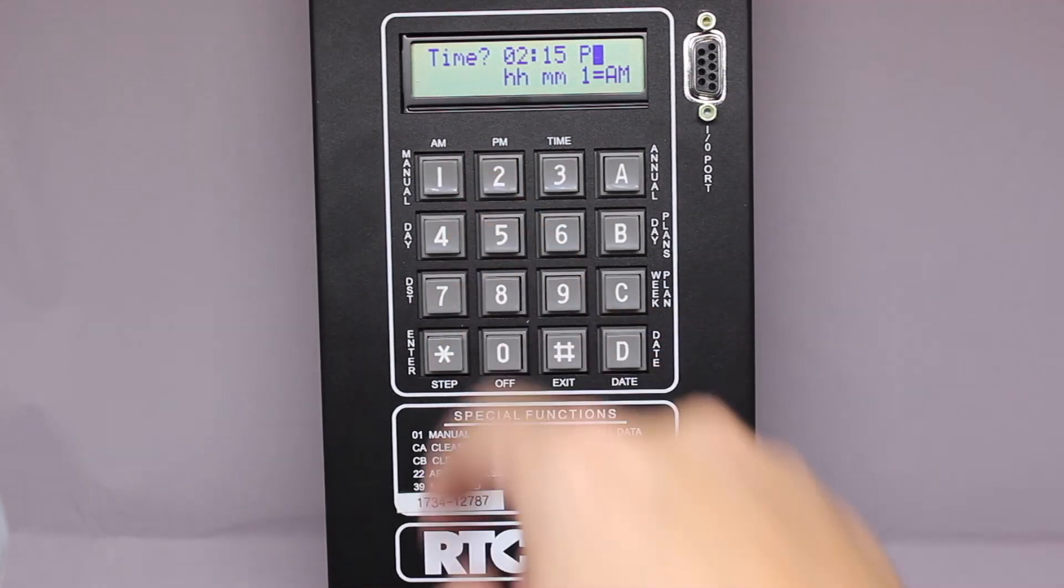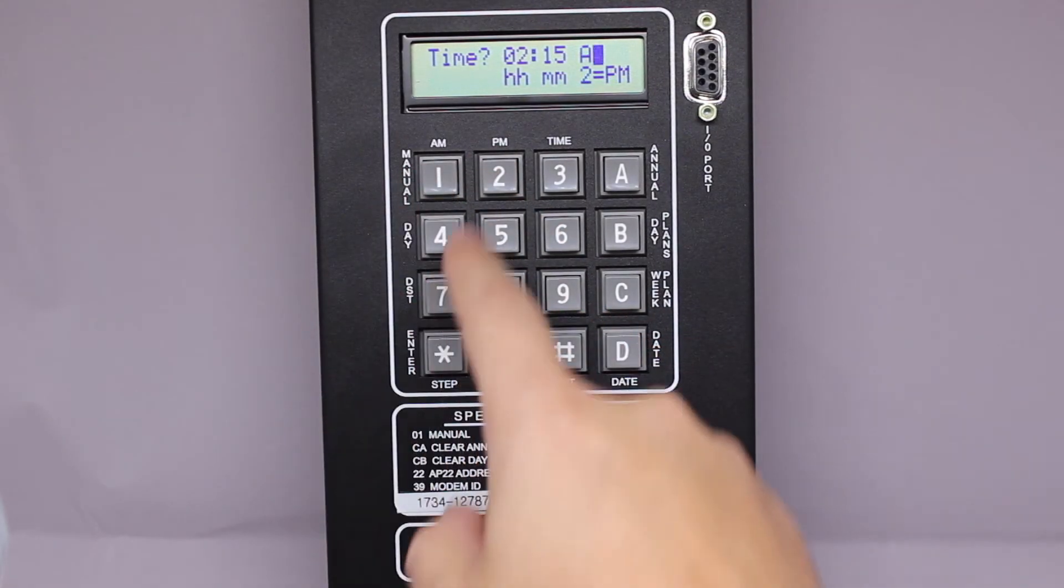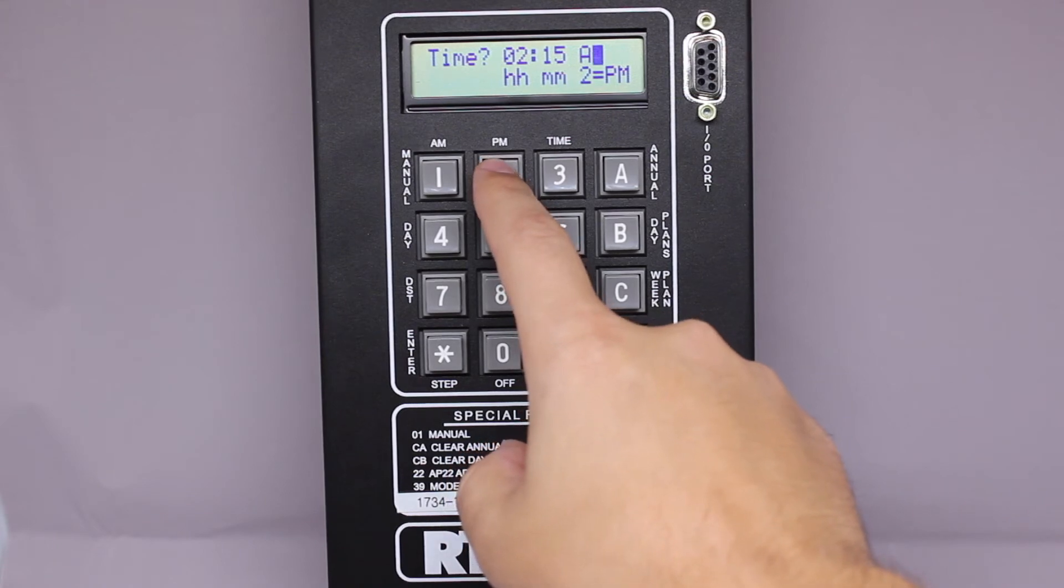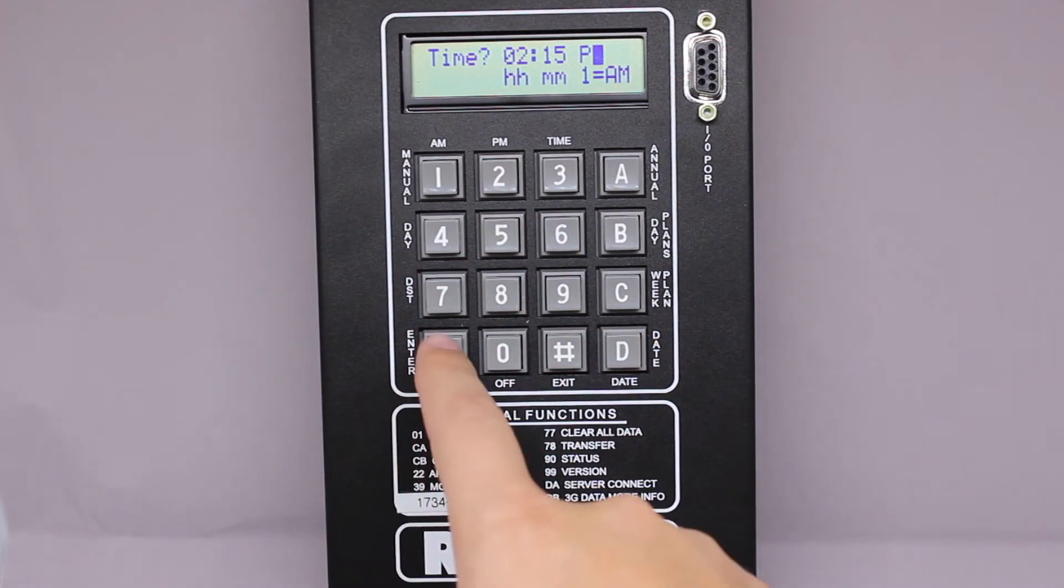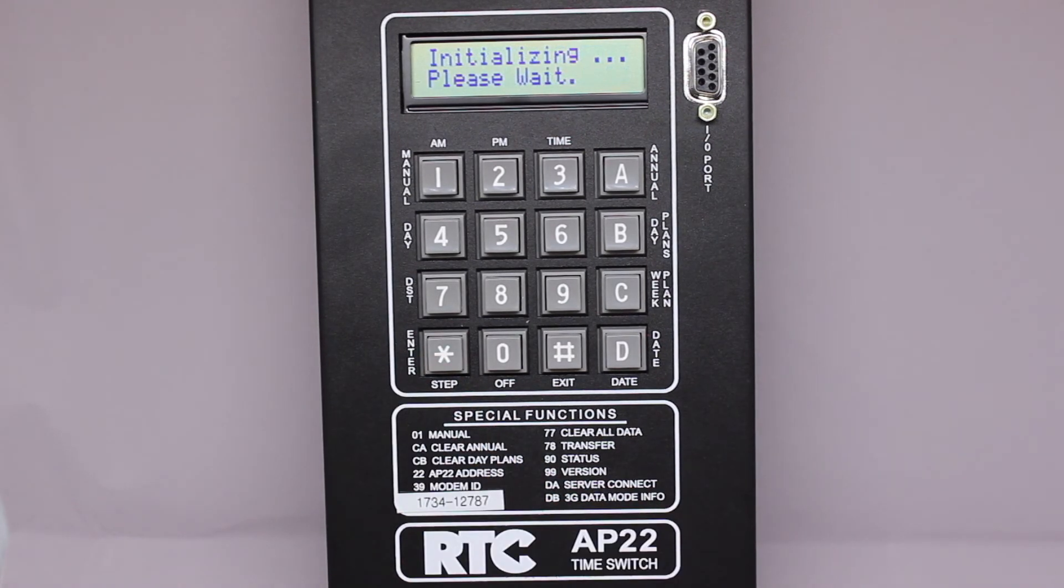If you are setting to an AM time, you'll use the number 1 to enter AM or 2 to insert PM, and you can see that change. Press star again and the AP22 will save and return to the main screen, and you should see that your time has been updated.